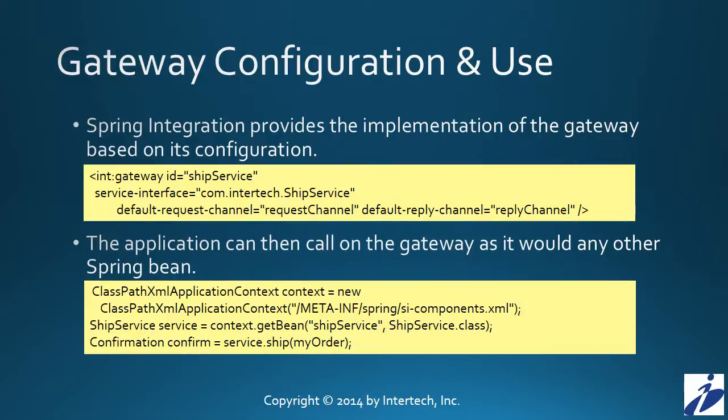With the interface defined, one needs now only configure the gateway in your Spring Integration configuration. In this case, the ShipService is configured with a default request channel of "request channel" and a default reply channel of "reply channel." The ship order object is going to be placed into the request channel for the Spring Integration system to start working on, and it will reply back to the application through the reply channel with that confirmation object. With both the gateway defined and the gateway interface defined, we see here at the bottom of the slide the means now for the application to call on the Spring Integration system without directly referring to any of the API — it simply makes a call that looks like a call to a standard Spring Bean.